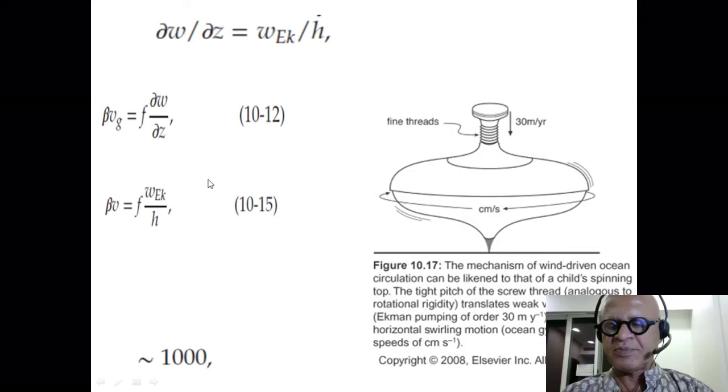Then you can estimate the amplification you get. You take beta over here and f, or beta h becomes v over w_ek, so you can see what is the amplification. And you can write that with f is 2 omega sin phi and beta is df/dy, and put that all together.